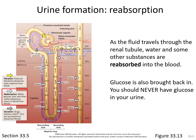Glucose is also brought back in, so you should never have glucose in your urine. In diabetes, one of the diagnostics is glucose showing up in urine. The only reason it appears is because the glucose level in the bloodstream gets so high that it overcomes the ability of the renal tubule to reabsorb all of it. If you have an extraordinarily high blood glucose level, it will show up in your urine.